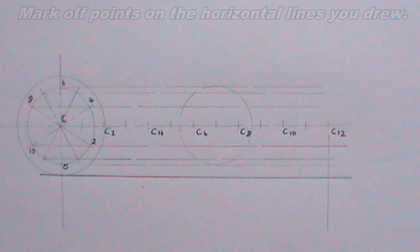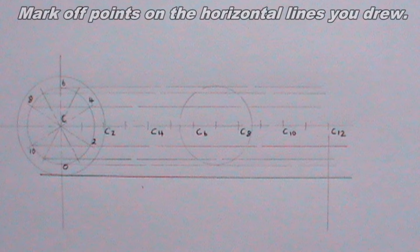Now I will mark off points on the horizontal lines I drew. I will do so by placing my compass on points I marked on the horizontal line I drew passing through the center of the circles.